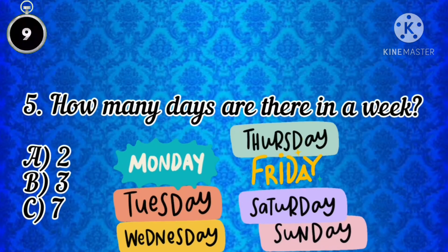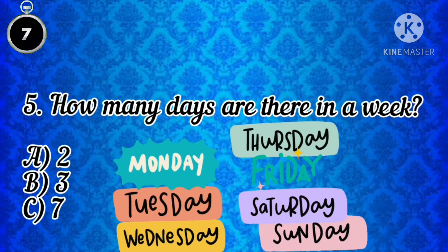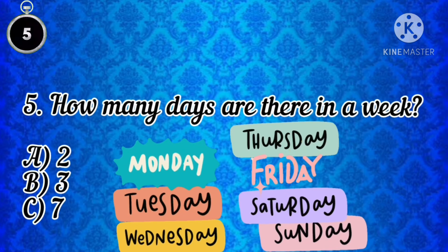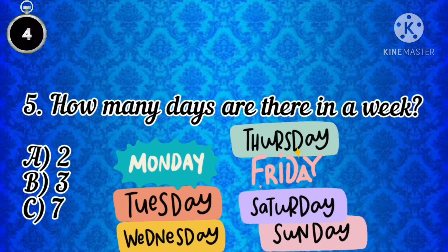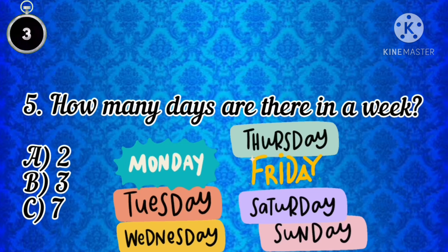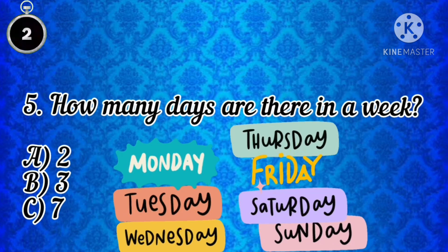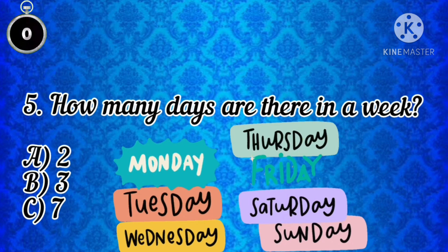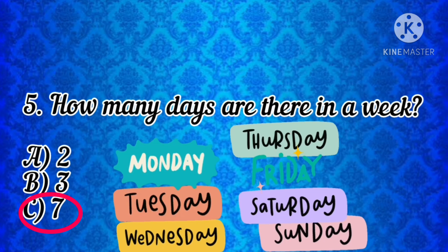How many days are there in a week? Option A. 2. Option B. 3. Option C. 7.